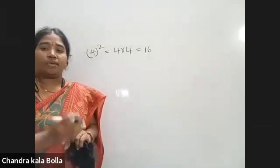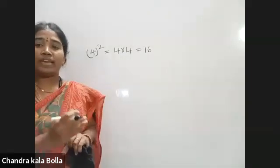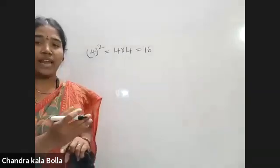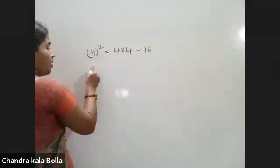For example, 10 squared, 20 squared — if you have these square values, it is straightforward. 20 squared is 20 into 20.